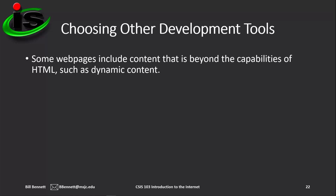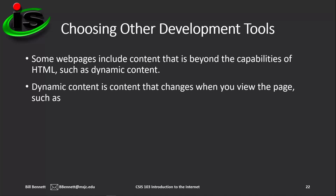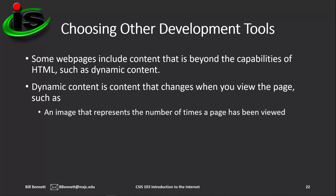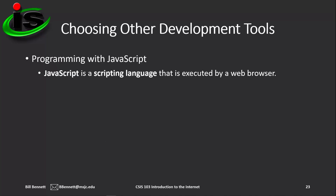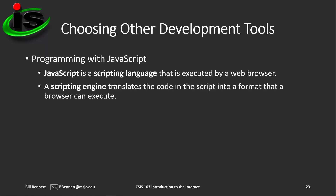Some web pages include content that is beyond the capabilities of HTML, such as dynamic content. Dynamic content is content that changes when you view the page, such as an image that represents the number of times a page has been viewed, an animated graphic, or an interactive product display. JavaScript is a scripting language that is executed by a web browser. To process a script in the web browser, it uses a scripting engine, which translates the code in the script into a format that the browser can execute.